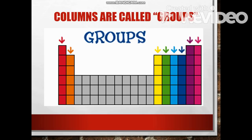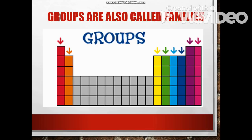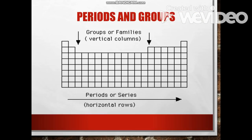Columns are called groups, also known as families. Elements in each family have similar but not identical properties. Groups or families are in the vertical columns, while periods or series are the horizontal rows.